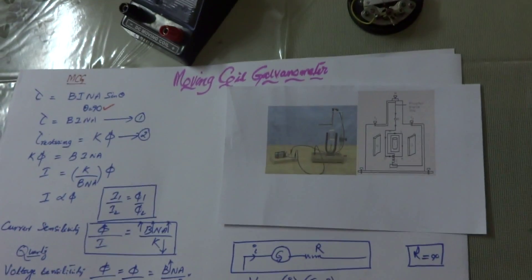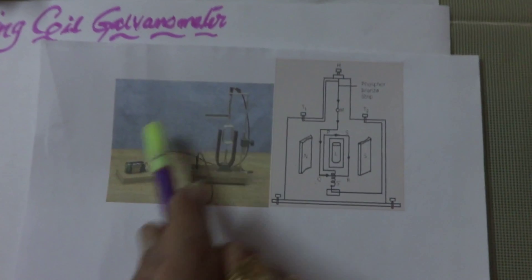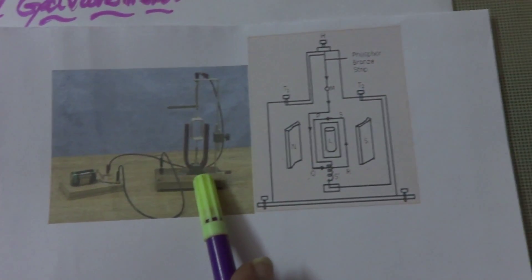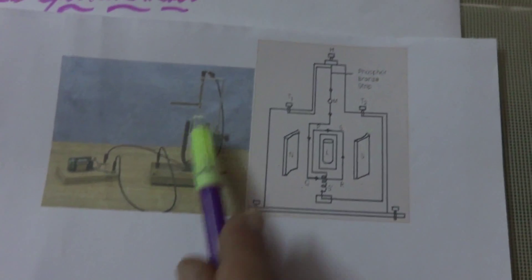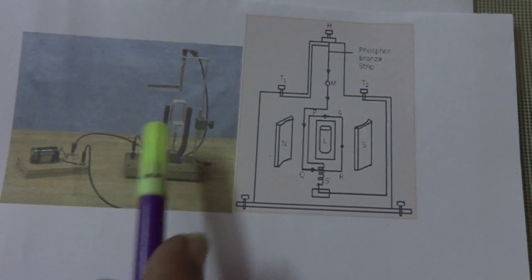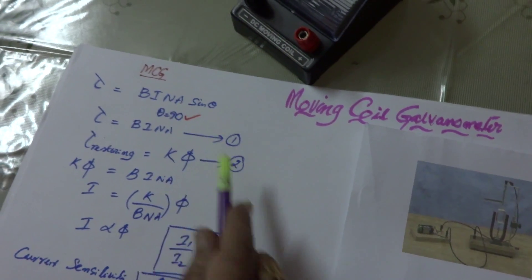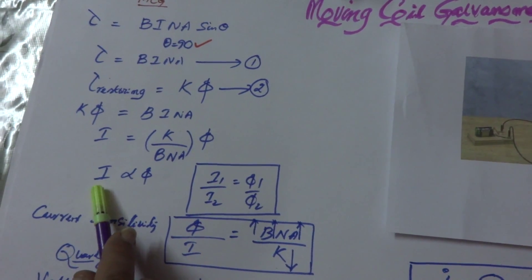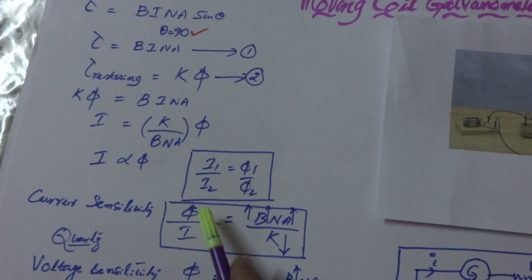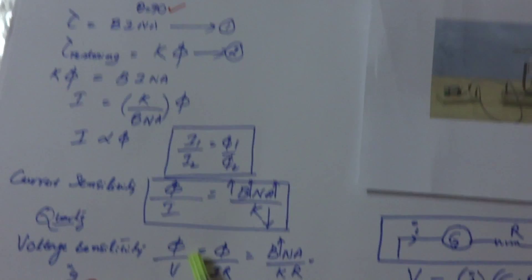So this moving coil galvanometer — we have discussed the use of it. Whenever current is passing through this setup, then automatically it will be rotated and this torque B I N A sin theta, because we are creating radial magnetic field with concave poles, theta is 90. So the restoring torque provided by the spring at equilibrium condition gives us that I is directly proportional to phi. And voltage sensitivity is phi to V.